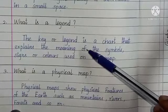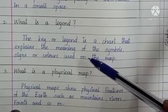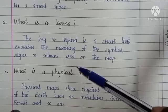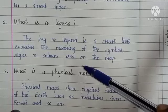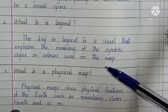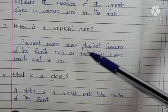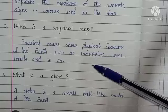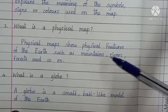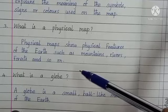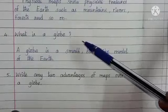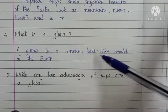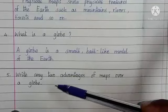What is a legend? The key or legend is a chart that explains the meaning of the symbols, signs, or colors used on the map. What is a physical map? Physical maps show physical features of the earth such as mountains, rivers, forests, and so on. What is a globe? A globe is a small ball-like model of the earth.